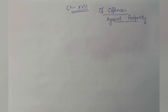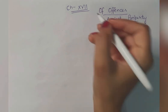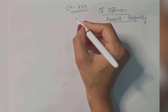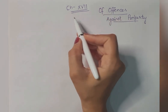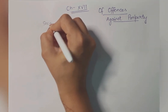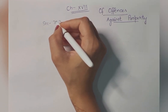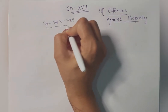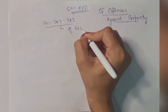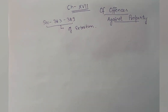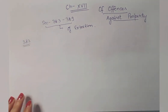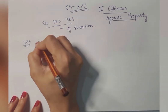Hello friends, welcome back to our channel Learn with Nishman. In the last video we did Chapter 17 and sections 378 to 382. Today we are again continuing Chapter 17 on offenses against property and we are going to discuss sections 383 to 389. This group of sections belongs to extortion — offenses of extortion. Extortion is also property-related, and section 383 gives us the definition of extortion.